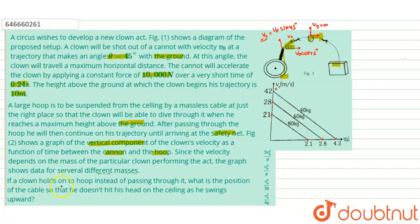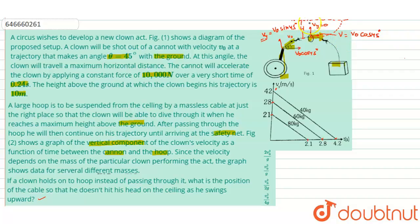If a clown holds on to the hoop instead of passing through it, what is the position of the cable so that he doesn't hit his head on the ceiling as he swings upward? Instead of passing through, the clown holds the hoop and it swings upward. Let the total height from the hoop to the ceiling be capital H, and the height of the cable be h.